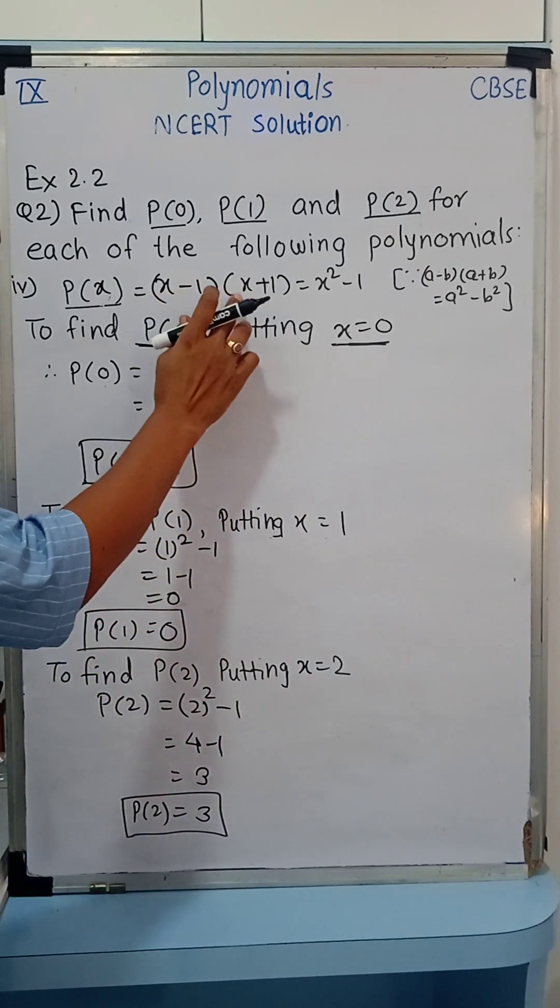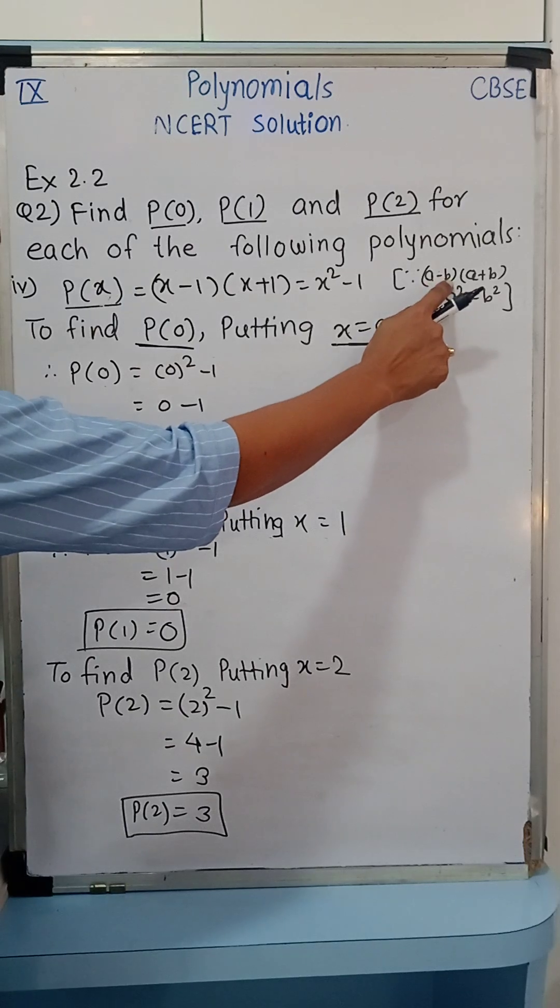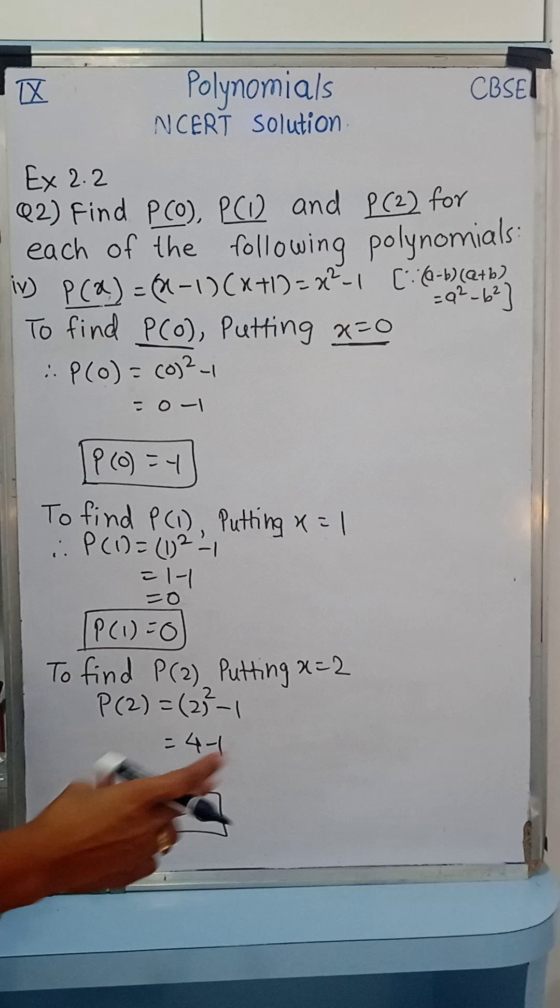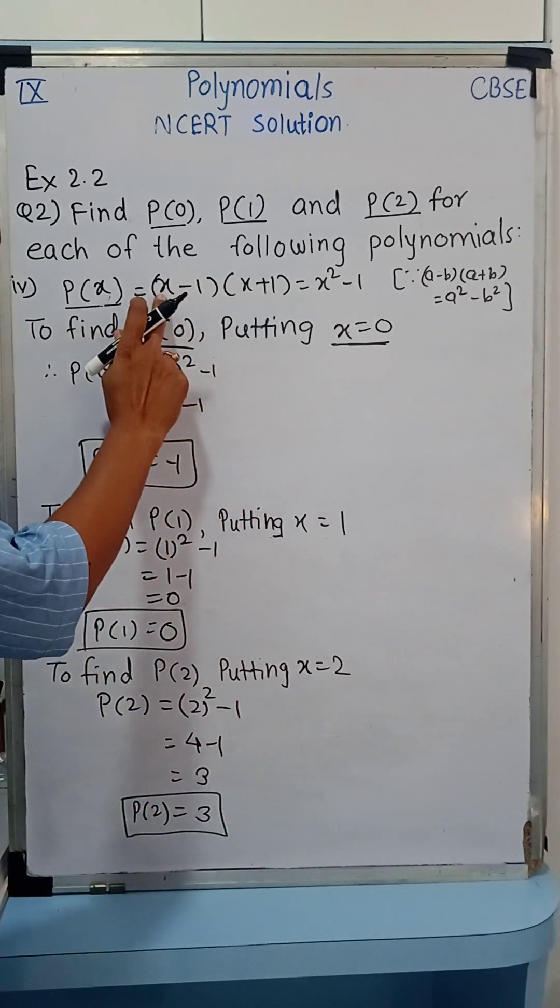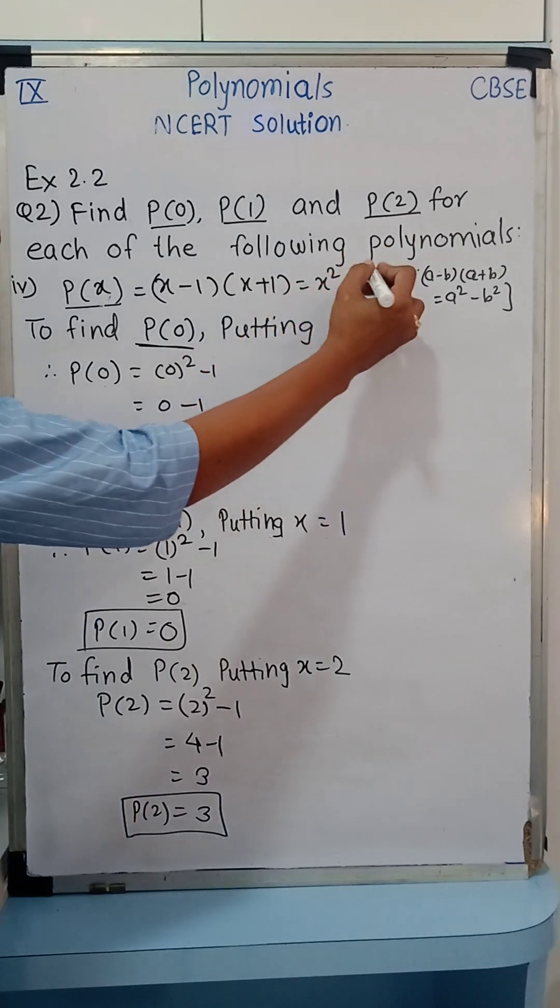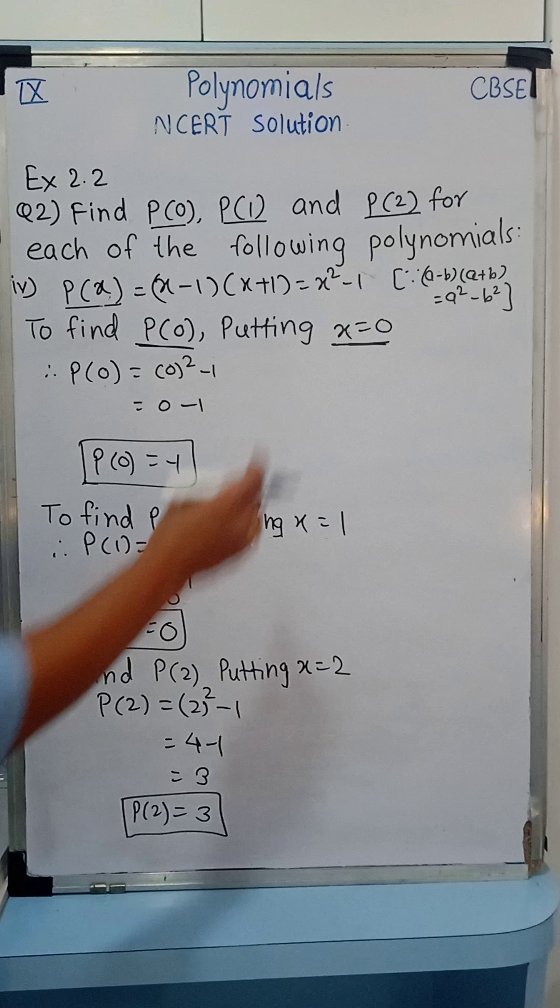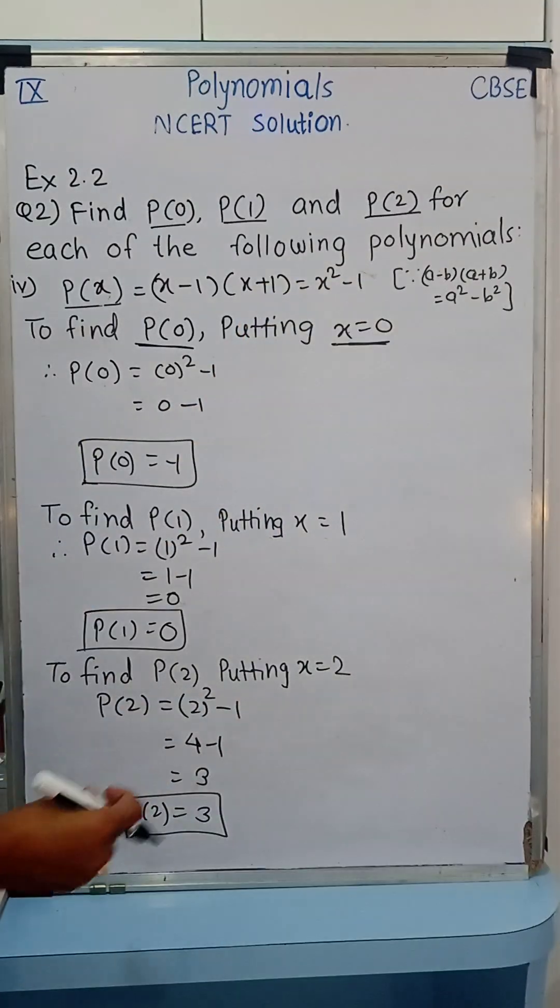So (x-1)(x+1), we have one identity, (a-b)(a+b) equals a squared minus b squared. So we will use that identity, first variable squared that is x squared minus 1 squared, so x squared minus 1 squared will be 1. So its simplest form is x squared minus 1.